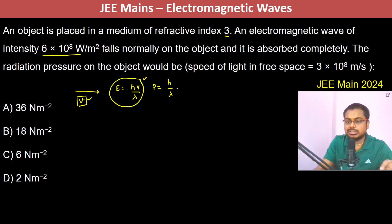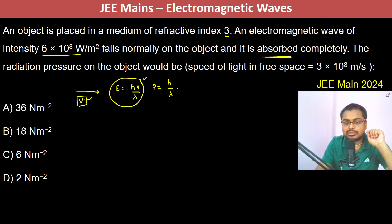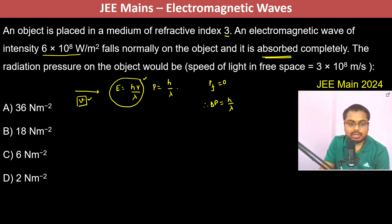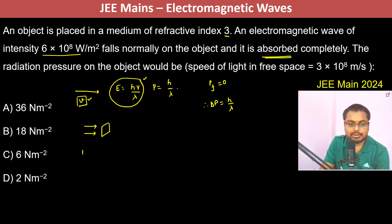The momentum of each photon is p = h/λ. Since the photons are getting absorbed completely, p_final is equal to 0, so therefore Δp is going to be h/λ. Now we consider an area of 1 meter square, and the electromagnetic waves are falling in. For 1 meter square and 1 second, the energy incident is intensity multiplied by 1 meter square multiplied by 1 second.